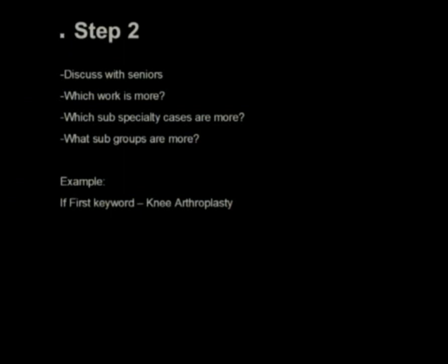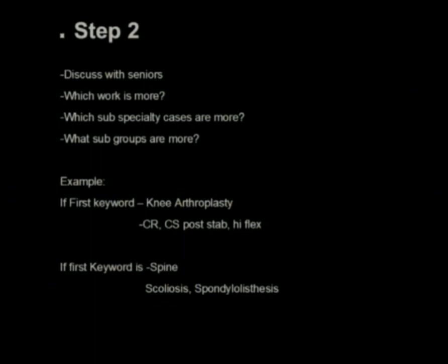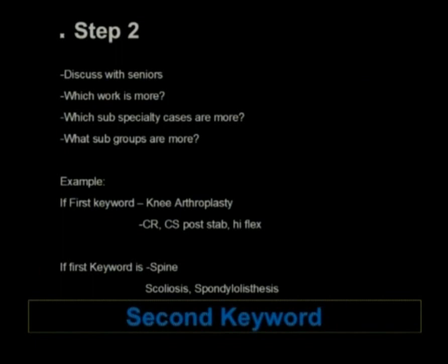Step two, discuss with your seniors. Discuss which work is more, is arthroplasty more, trauma more, or spine is not done in your institute, so you can't do a spine paper. Which specialty cases are more? For example, if arthroscopy is done, is it knee arthroscopy, shoulder, or elbow, or any other case that has been done more in your institute? It depends on what cases you are having at your institute. The same thing applies to sample size. It always depends on what cases you have at your institute. Feasibility has to be checked. This is your second keyword. Discuss with your seniors. For example, if your first keyword is knee arthroplasty, your senior can give you crucial retaining, substituting, something like that. This also defines the feasibility of the study, your second keyword.